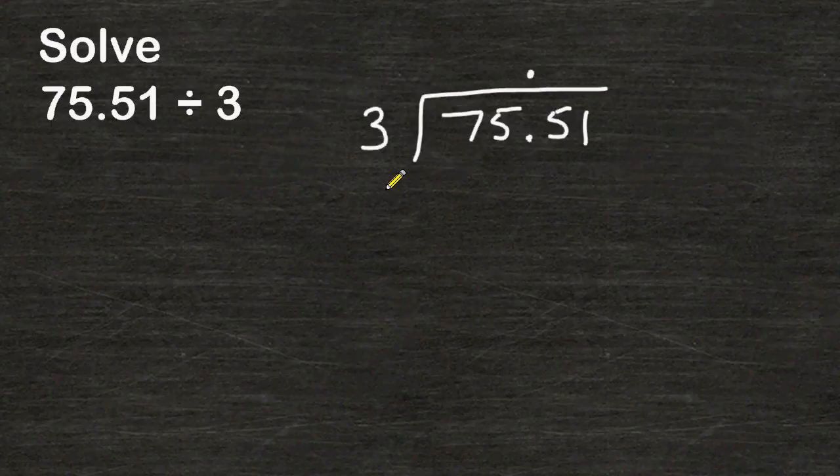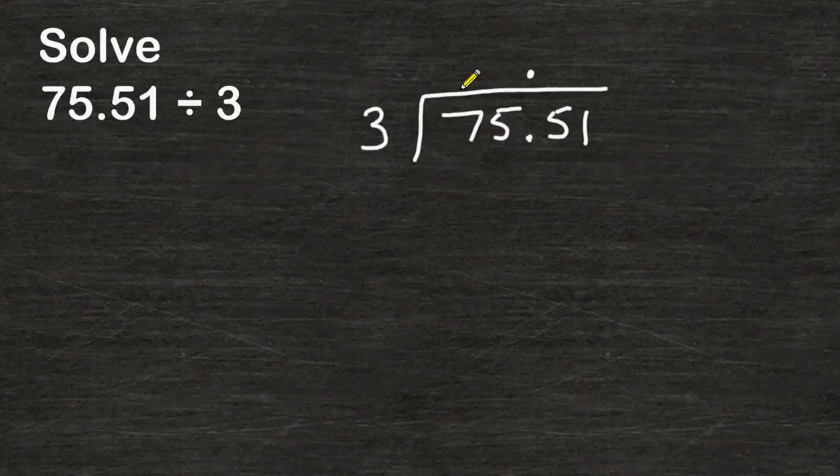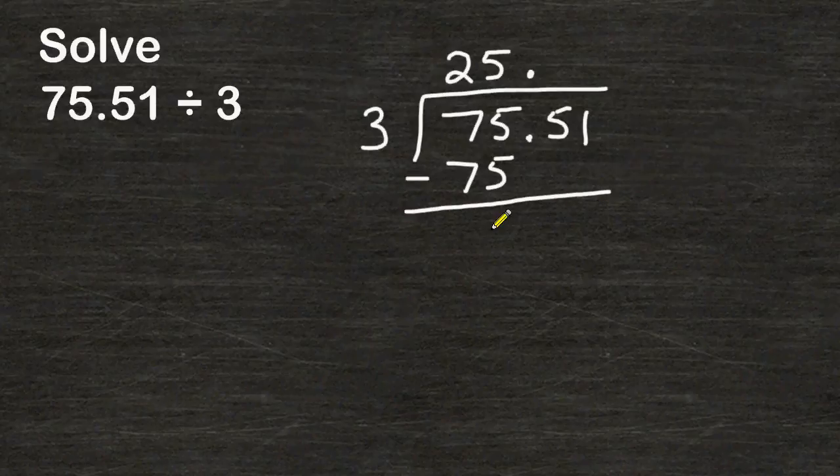The next thing we can do is divide 3 into 7 or we can divide 3 into 75. Because I can recognize that 3 can be divided into 75 exactly 25 times I am going to write 25 directly above 75 and 3 groups of 25 has a product of 75 so we write that underneath 75. And when we subtract we get 0.